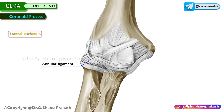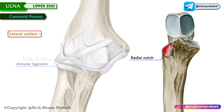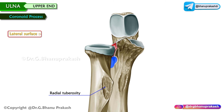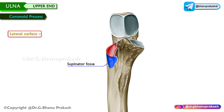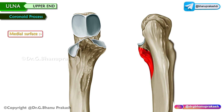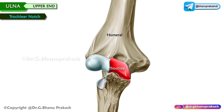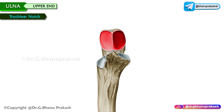The annular ligament is attached to the anterior and posterior margins of the radial notch. Below the radial notch there is a hollow area — the supinator fossa — to allow free movement of the radial tuberosity during supination and pronation. The supinator crest is situated behind the supinator fossa. The medial surface is concave, and the medial border is sharp with a small tubercle at its upper part. The lateral border is the trochlear notch that articulates with the humeral trochlea, formed by the anterior surface of the olecranon and upper surface of the coronoid process.